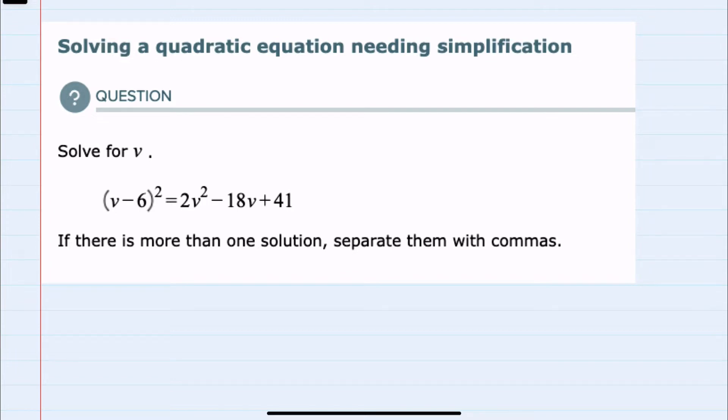We're solving for v here, and in this equation I can see that I have a factored term on the left, v minus 6 quantity squared, and the expression on the right, 2v² minus 18v plus 41.